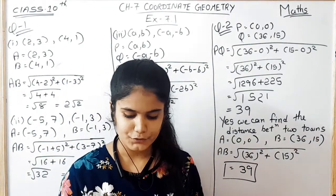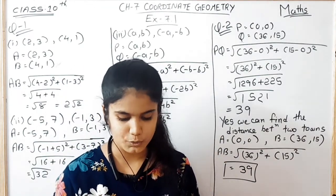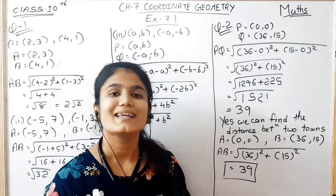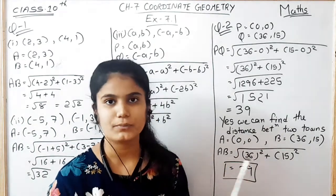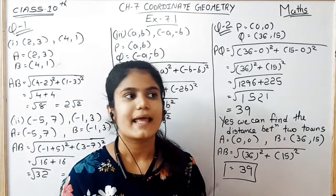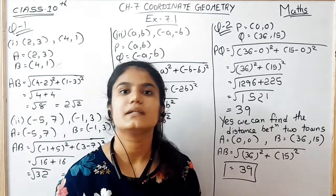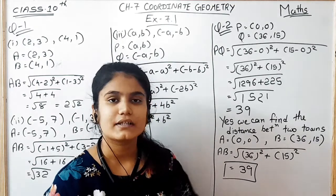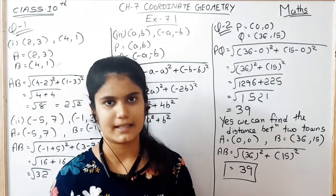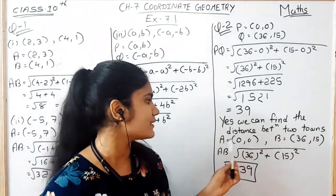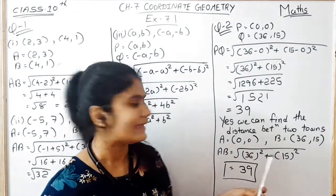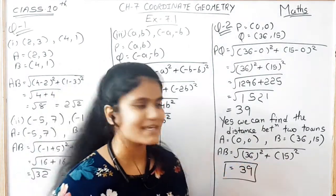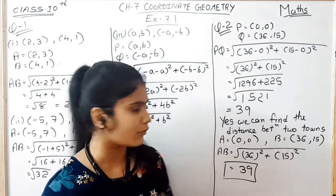Further, we have been asked: can you now find the distance between the two towns A and B discussed in section 7.2? In the distance formula section 7.2, the example of two towns A and B is given. So we take A as (0, 0) and B as (36, 15) coordinates.